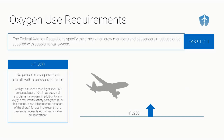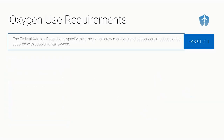The next rule is for above Flight Level 250, or approximately 25,000 feet MSL. For pressurized aircraft above FL250, a 10-minute supply of supplemental oxygen — in addition to any oxygen required under the previous rules — must be available for each occupant of the aircraft. This is for use in the event that a descent is necessitated by loss of cabin pressurization. So in a pressurized aircraft above FL250, you need at least 10 minutes of oxygen per occupant for a potential emergency descent.